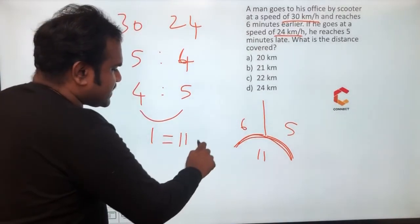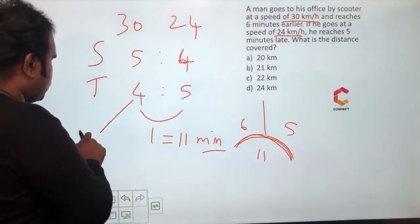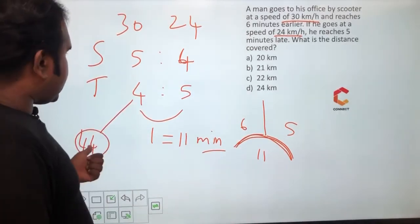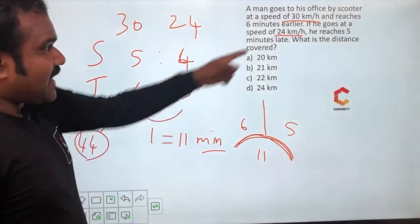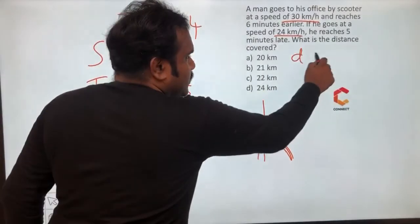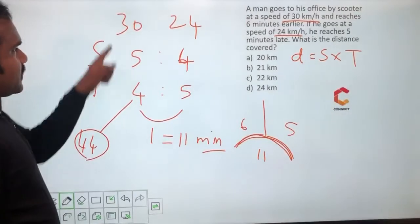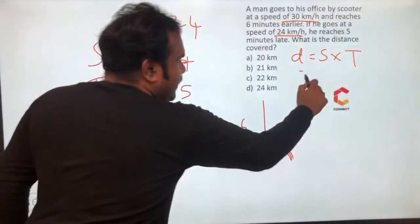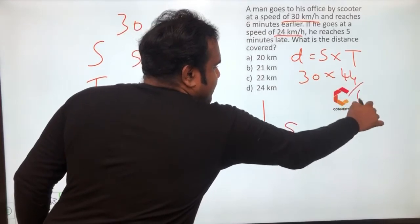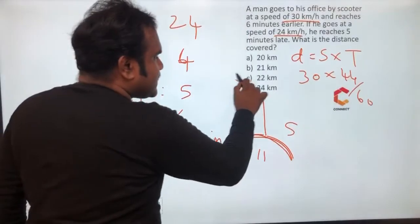One part equals eleven minutes. Four parts correspond to 44 minutes, so the usual time taken is 44 minutes. The question asks for distance covered: distance equals speed multiplied by time. Speed is 30, time taken is 44 minutes, so 30 × (44/60) = 30/60 × 44 = 44/2 = 22 kilometers. The distance covered is 22 kilometers.